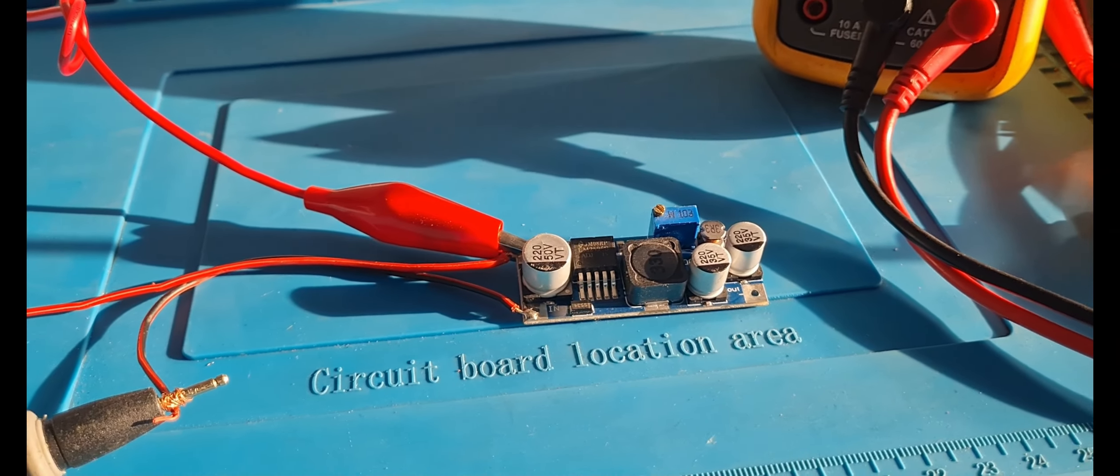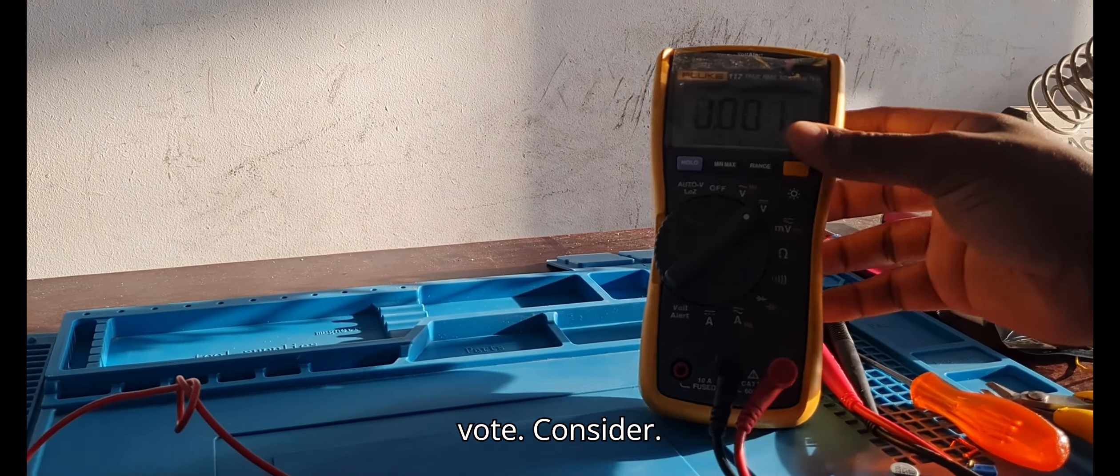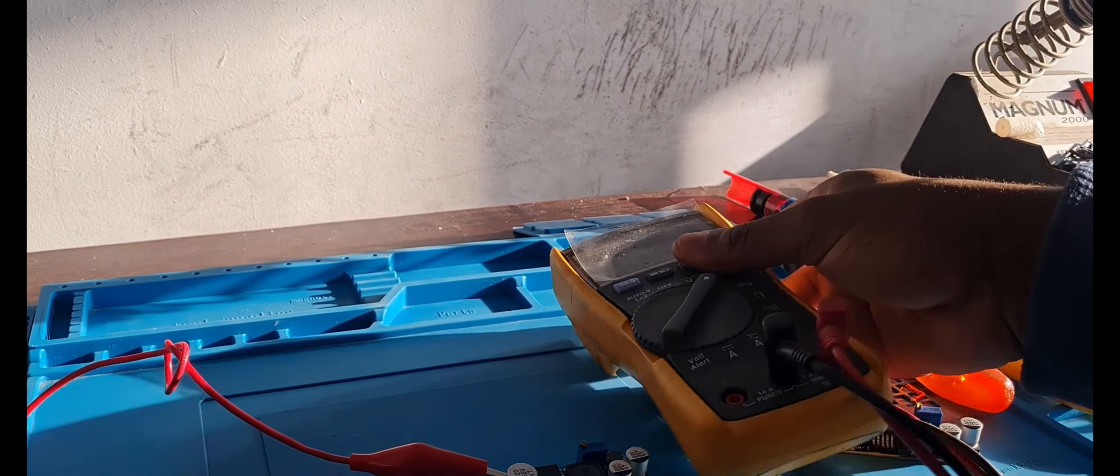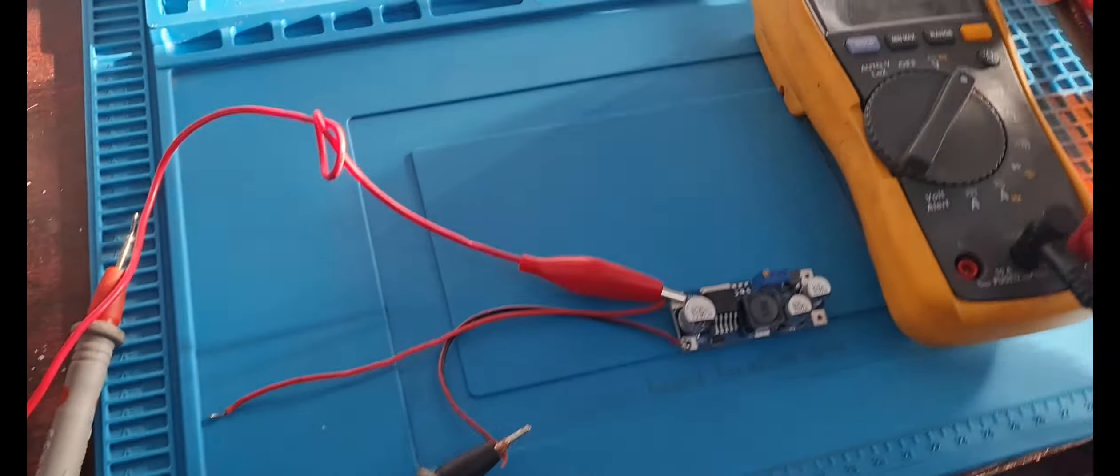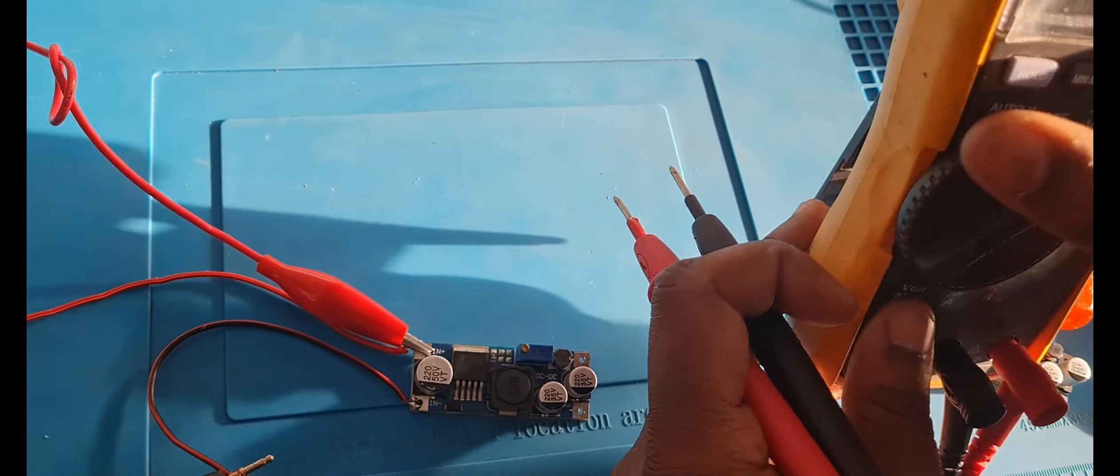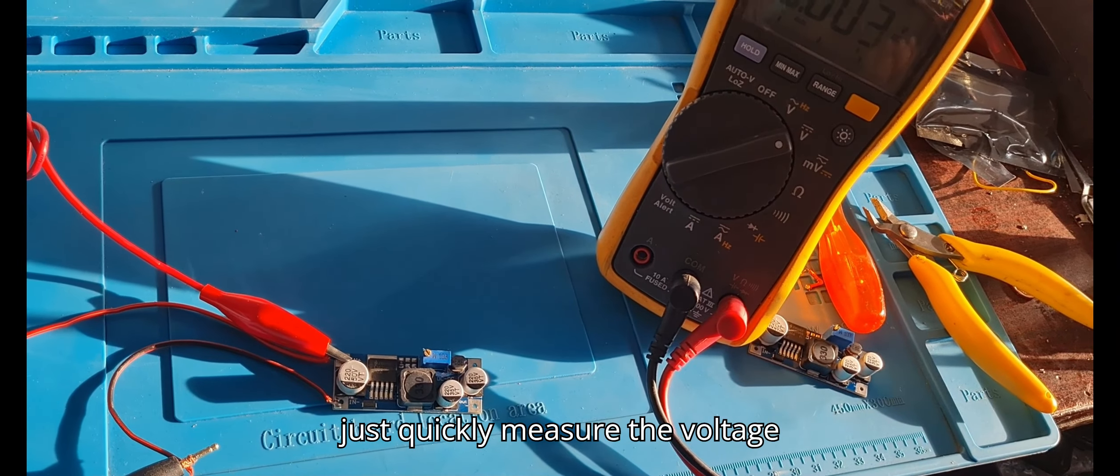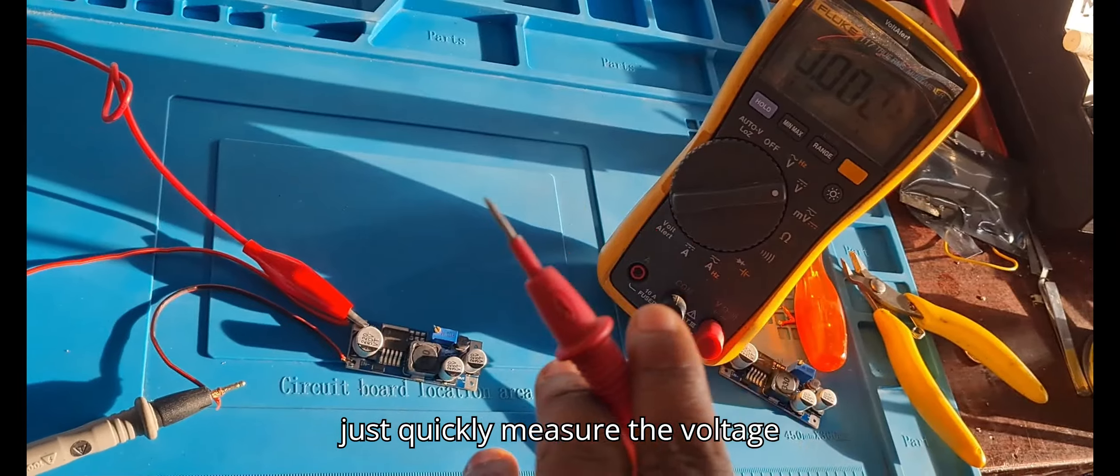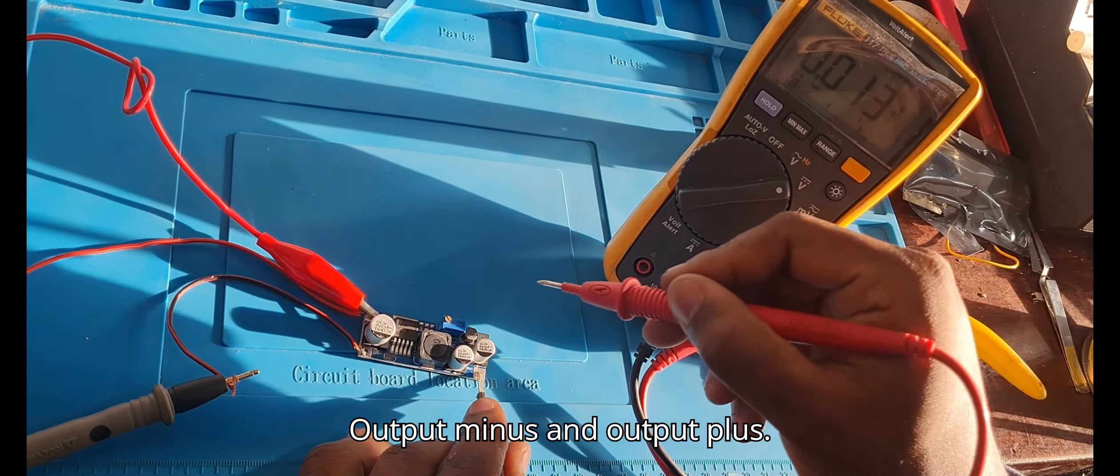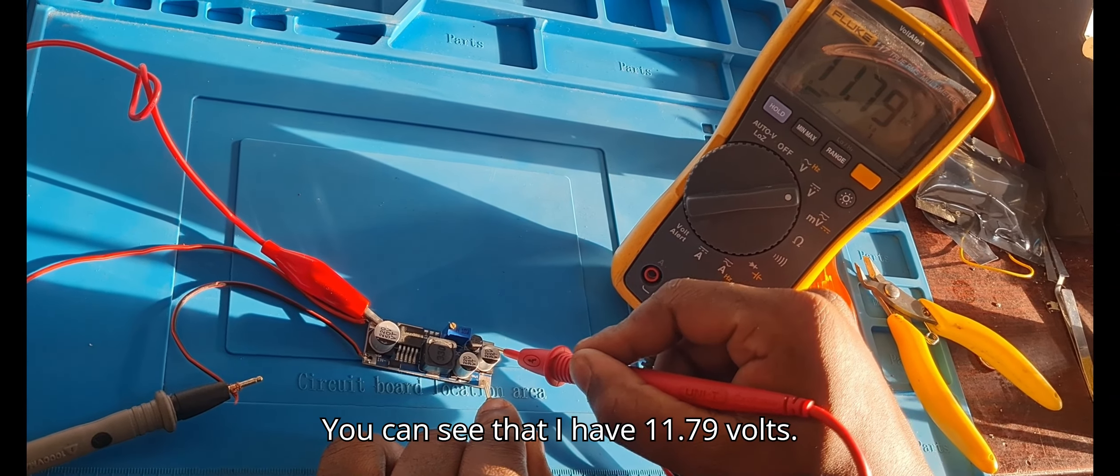I'll show you my multimeter, set to DC volts. The sunlight is okay, so I'll quickly measure the voltage at the output - output minus and output plus. You can see it has 11.79 volts.